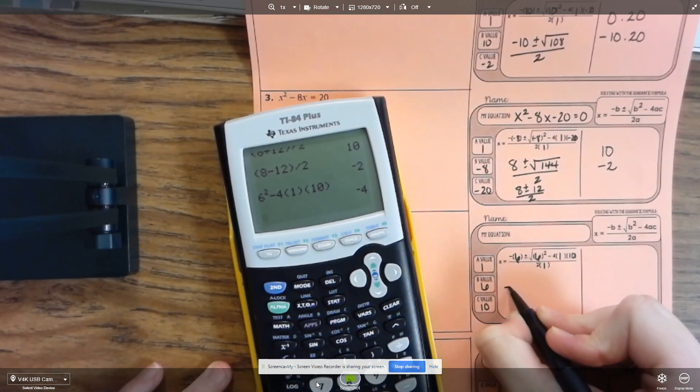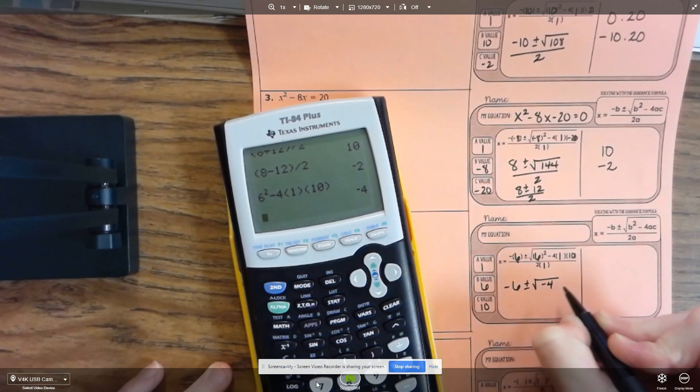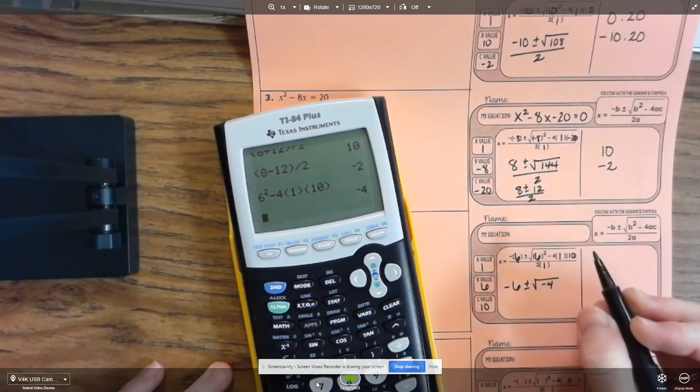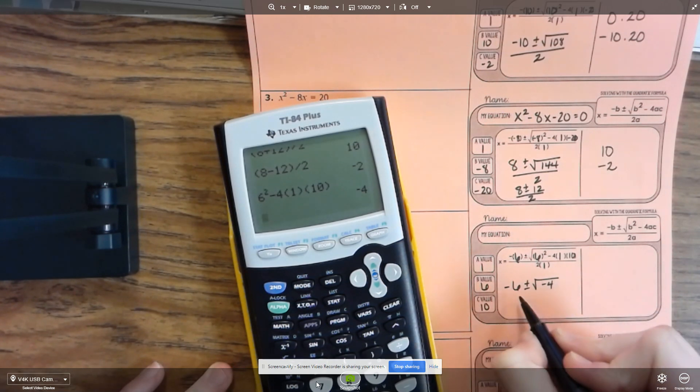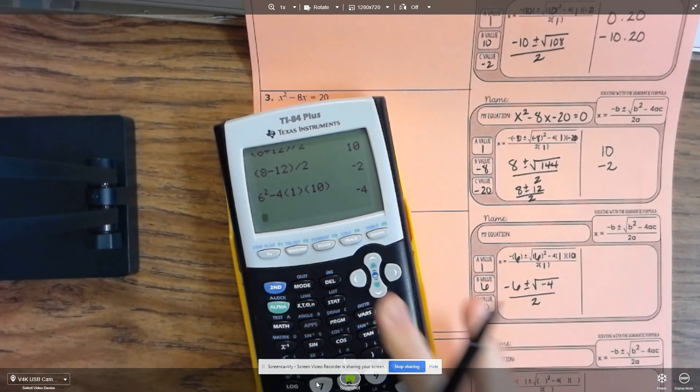So I have negative 6 plus or minus the square root of negative 4. And if you square root a negative number, you're going to start getting into your imaginary numbers. And so sometimes the best you can do, or the simplest way you can leave them, is in this form right here.